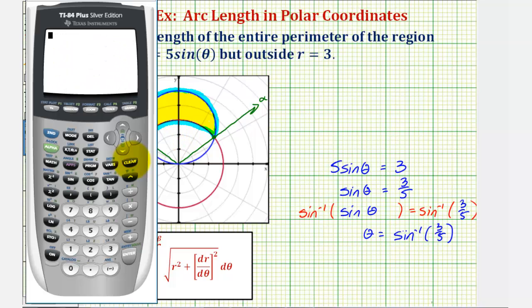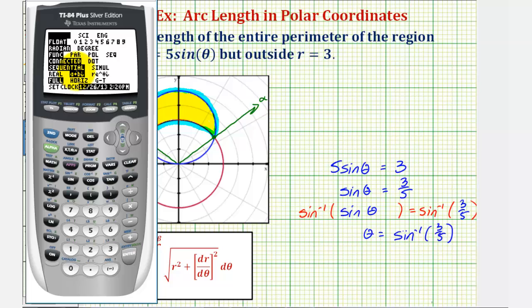Let's first verify we're in radian mode. We'll press the mode key. Notice how radian is highlighted. So we'll go back to the home screen and press the second sine for inverse sine three fifths, close parenthesis and enter. So angle theta in the first quadrant is approximately 0.6435 radians.